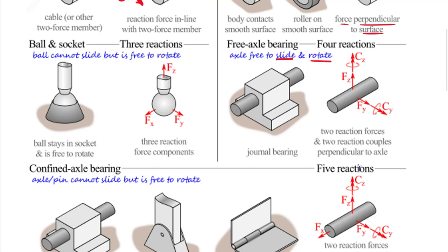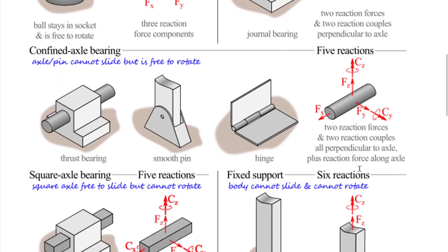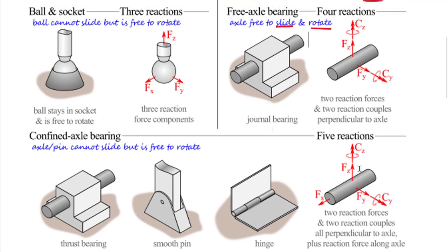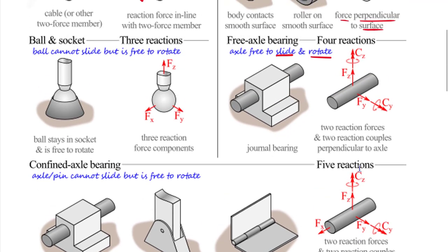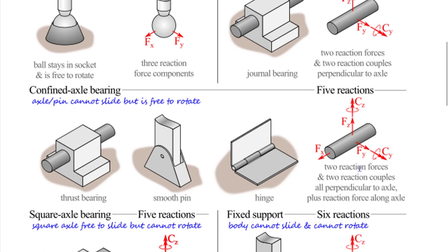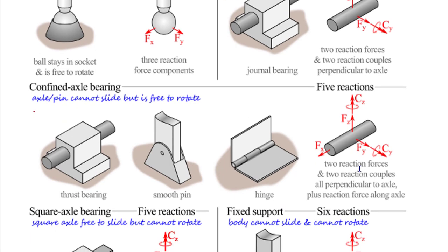A confined axle bearing is also called a thrust bearing. A free axle bearing is also known as a journal bearing, while a confined axle bearing is also known as a thrust bearing.